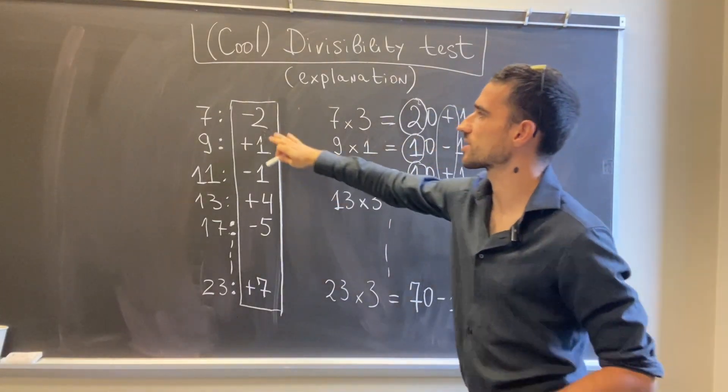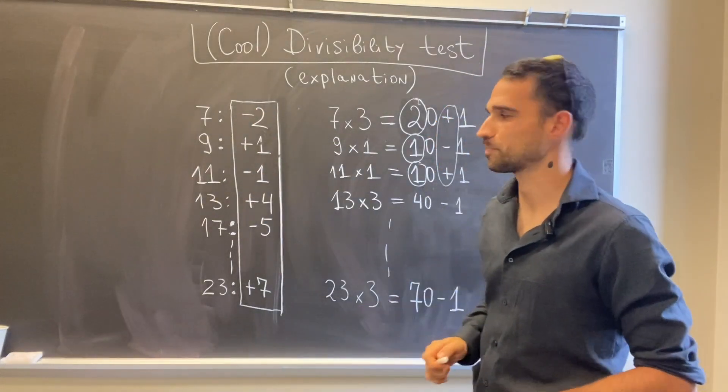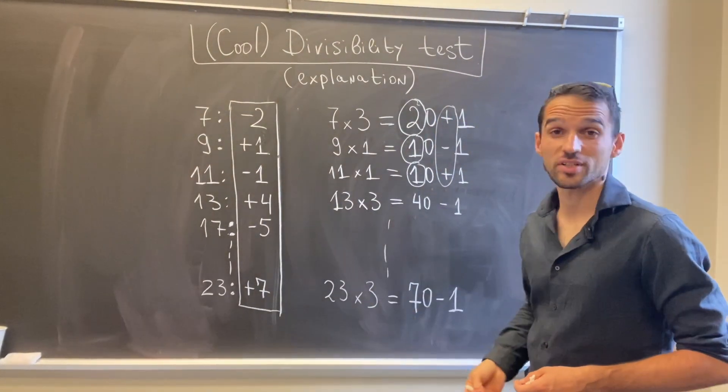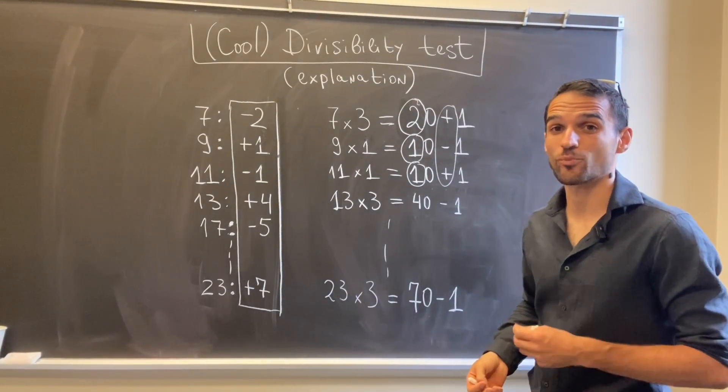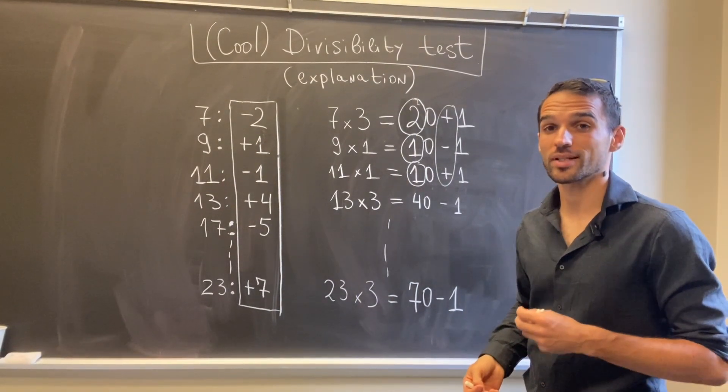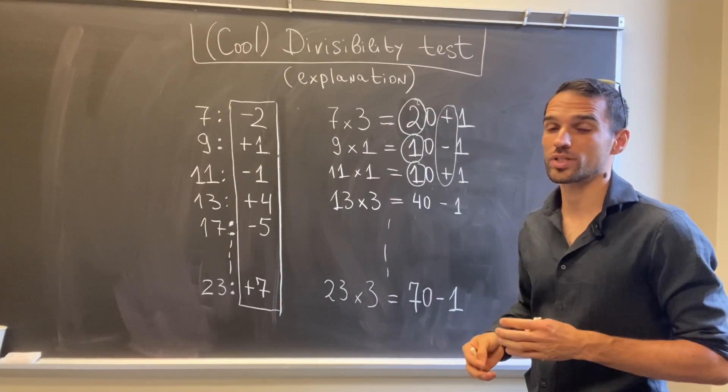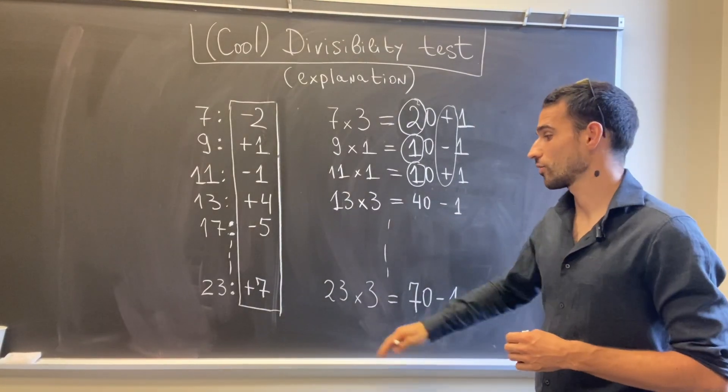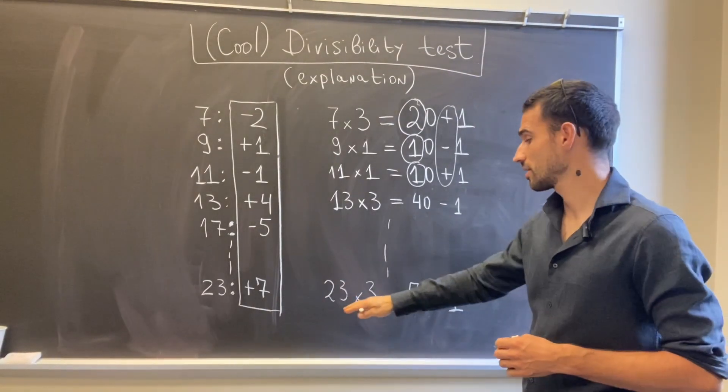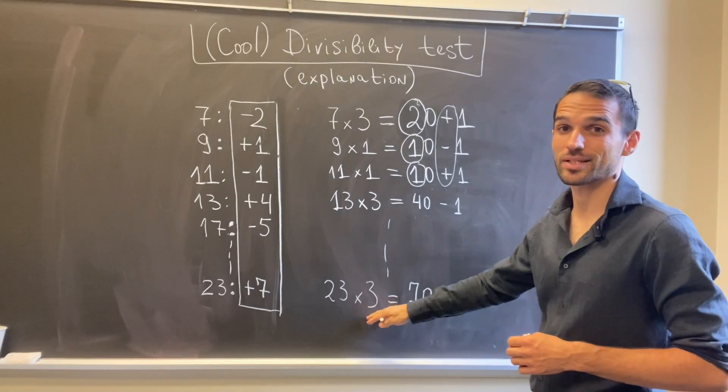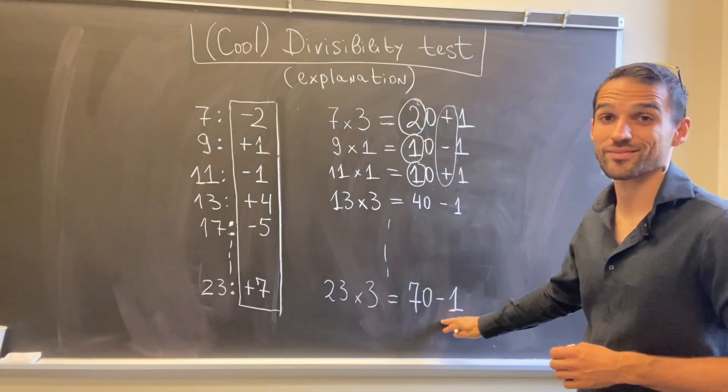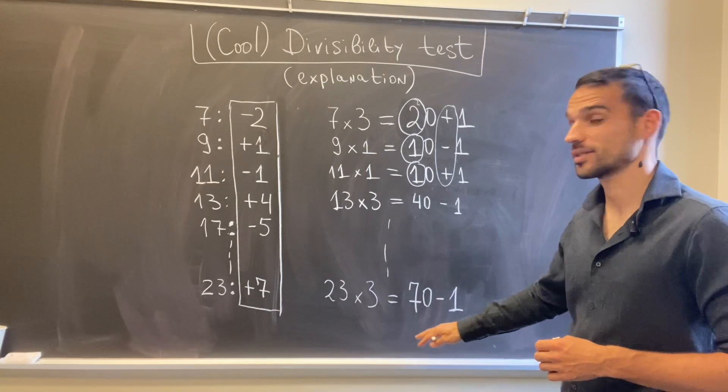To obtain the magical constant for some of these numbers, I need to look for the smallest multiple of this number that is almost a multiple of 10. For instance, for 23 I have 23 times 3 equals 69, which is 70 minus 1. So this is indeed the smallest multiple of 23 that is that close to a multiple of 10.